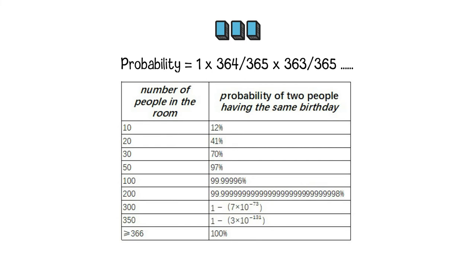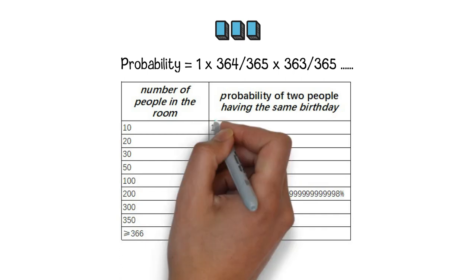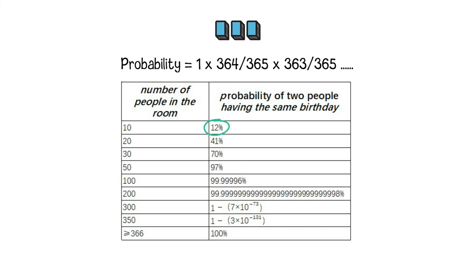The following table shows the exact probability based on the number of people. From the data in the table, we can see if there are only 10 people in the room, the chance to have two people sharing the birthday is low, which is just about 12%. However, when there are more than 50 people in the room, the final probability can reach more than 97%.